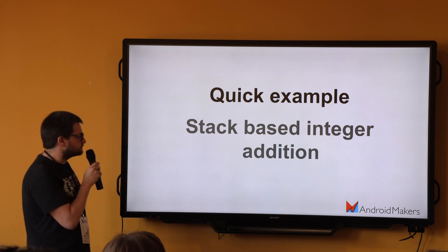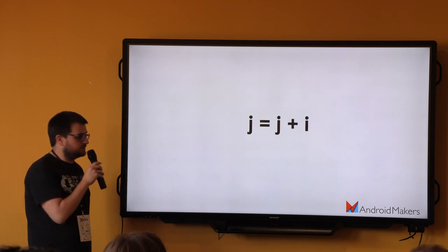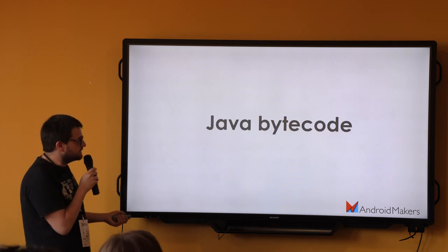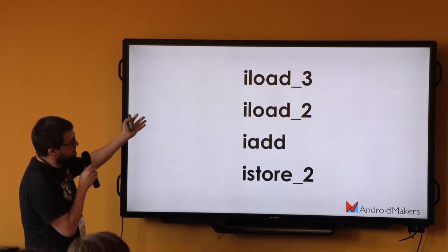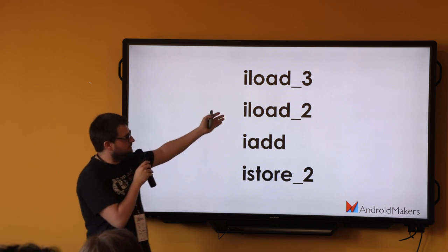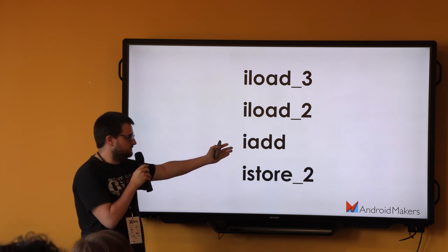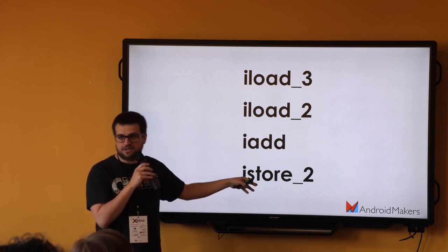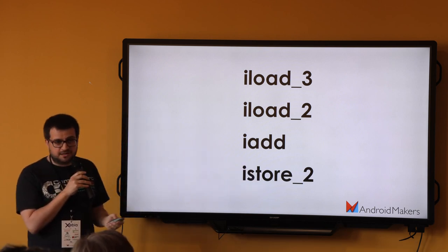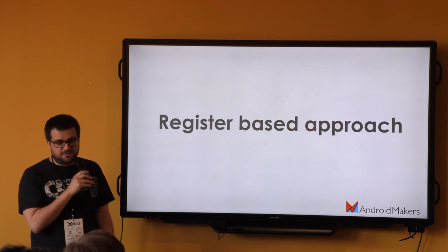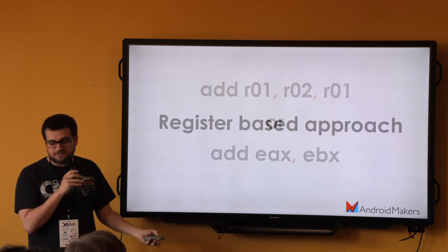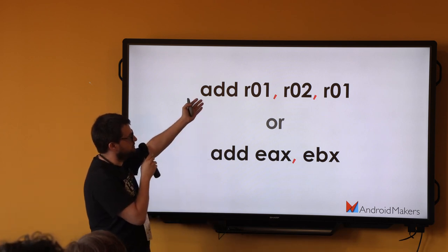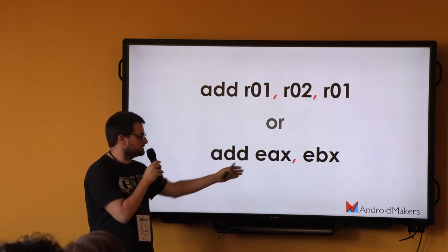Let's do a quick example. Imagine we want to do a simple addition. Looking at the bytecode: it loads one element, loads the other one onto the stack, adds them together, puts the result back on the stack, and then stores it in a variable. So for one addition, it's four operations. If you go for a register-based approach, it does the same with just one — for example, just one addition instruction.